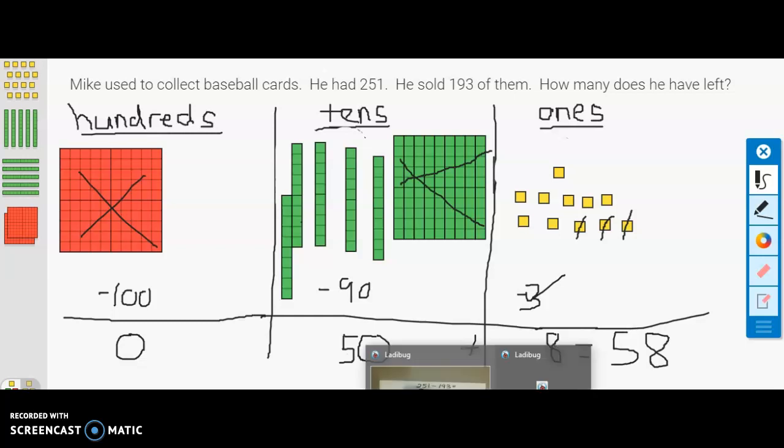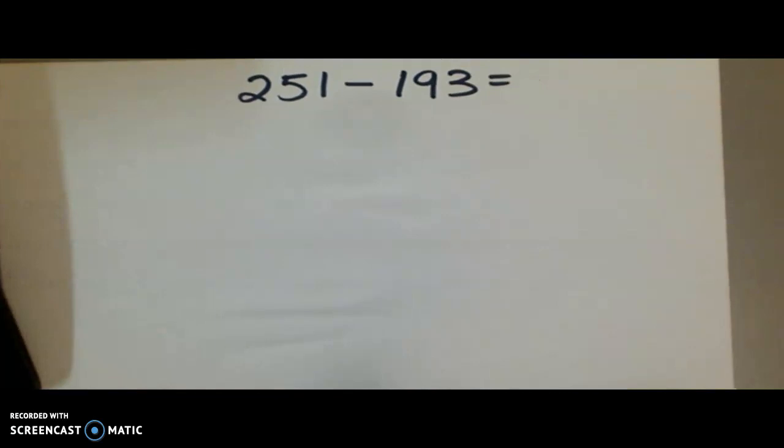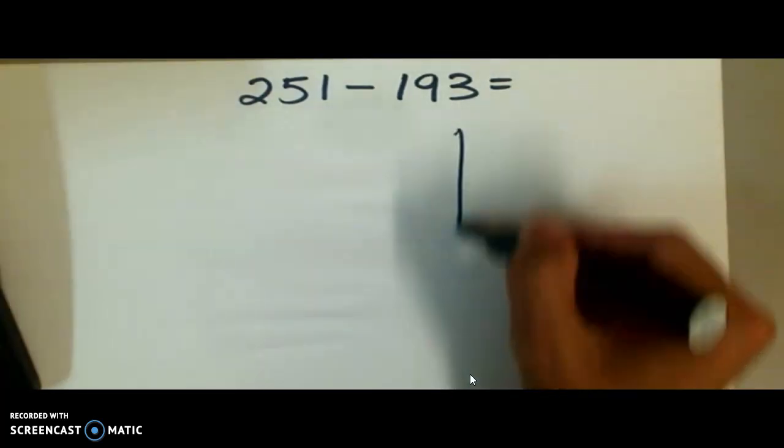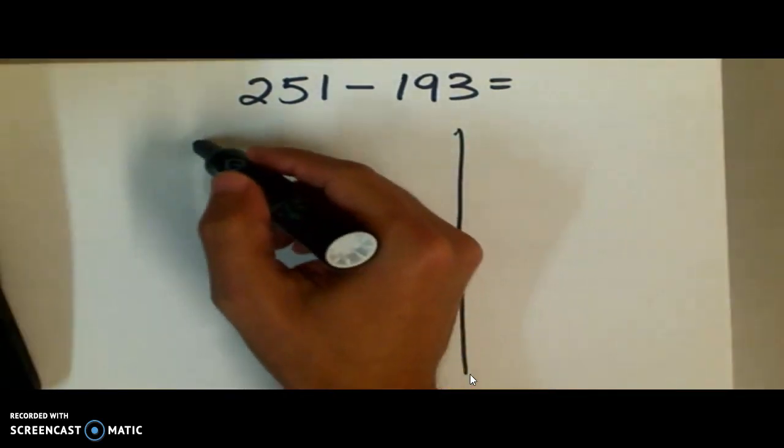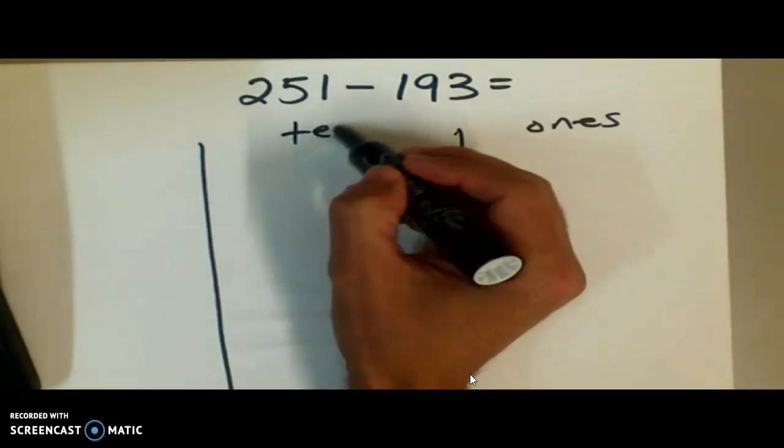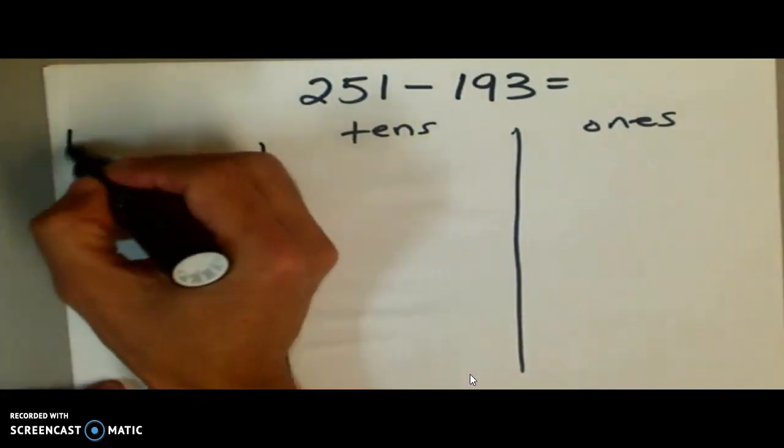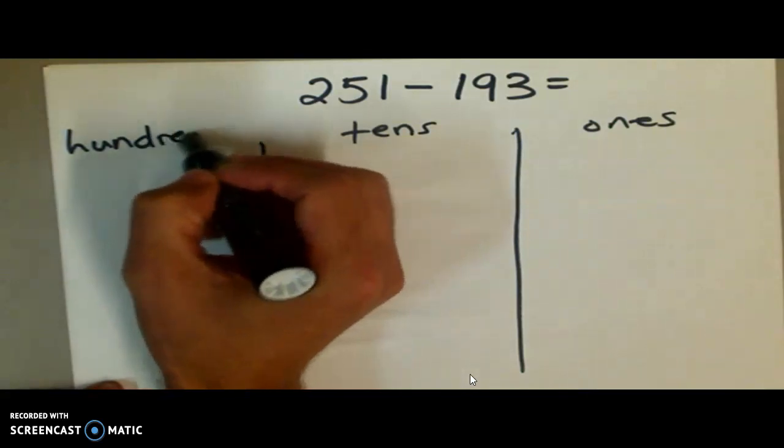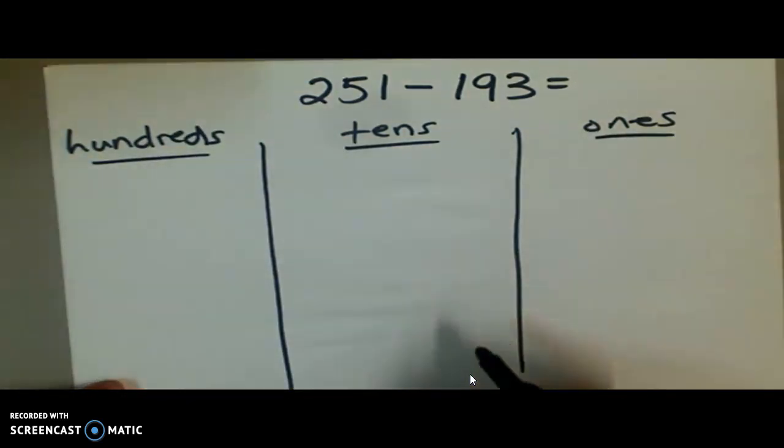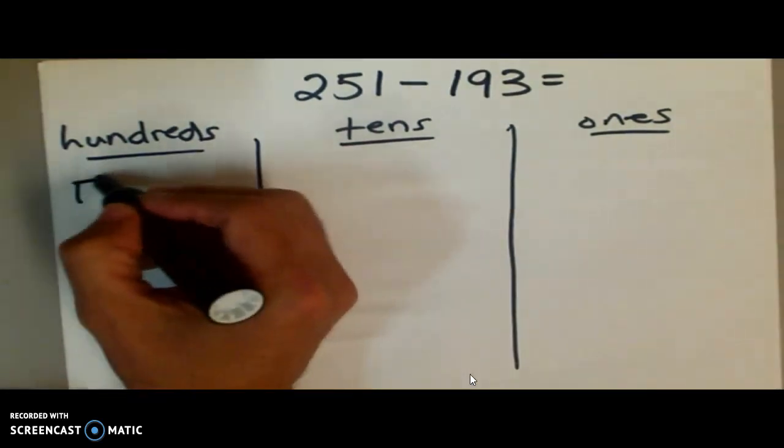You may want to watch that again if that was a little bit confusing. What I'm going to do is I'm going to show you what it looks like if you were just doing it on a piece of paper. So 251 minus 193. Let's do our little place value chart here. We have our ones and our tens and we have our hundreds.